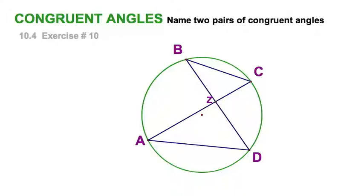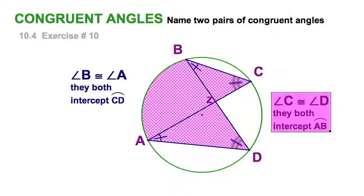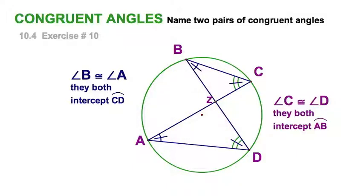Let's apply our new theorems to exercise number 10 from section 10.4. Two pairs of congruent angles. We've got the obvious vertical angles here, but let's go for something more interesting. We've got angles B and A both intercept the arc CD, and angle C and D both intersect the arc AB. Right there, I've got two pairs of congruent angles, and if I wanted to make another conclusion from that, I could also throw in that these two triangles would be similar by angle-angle. And that's it.